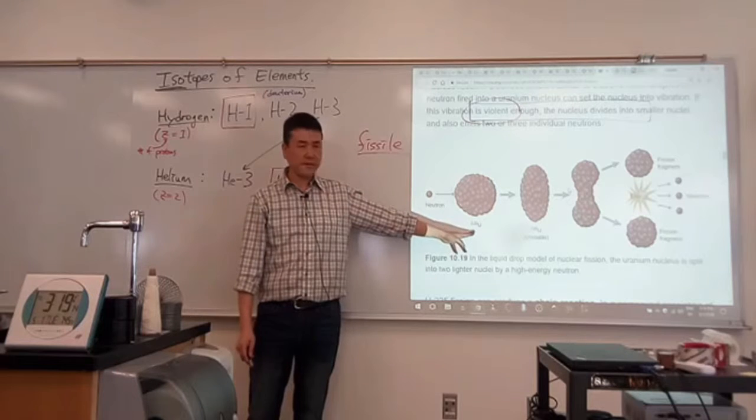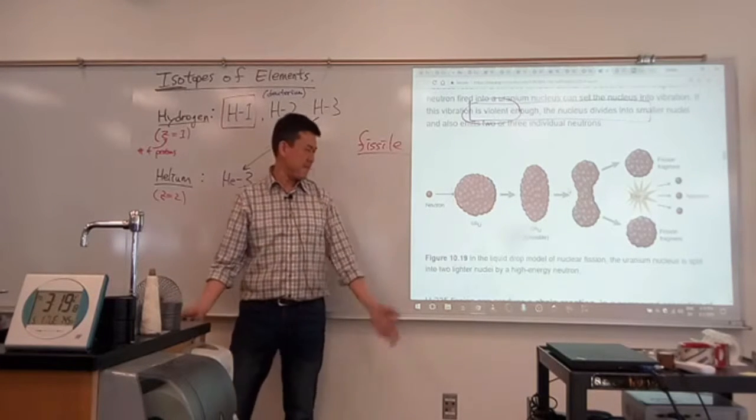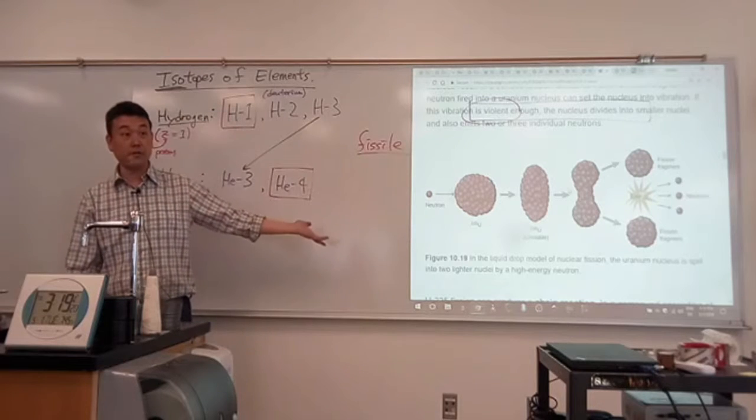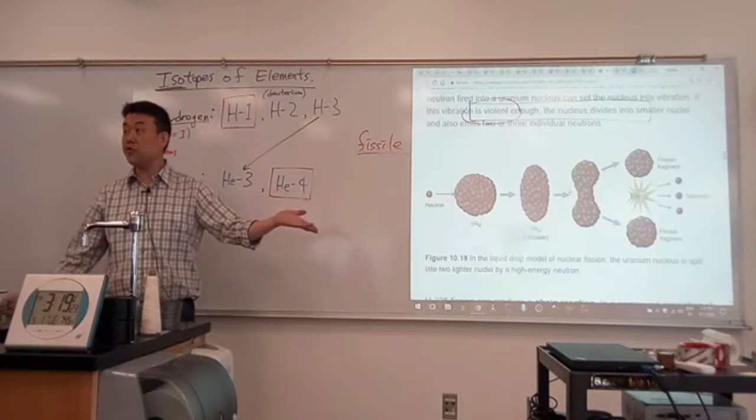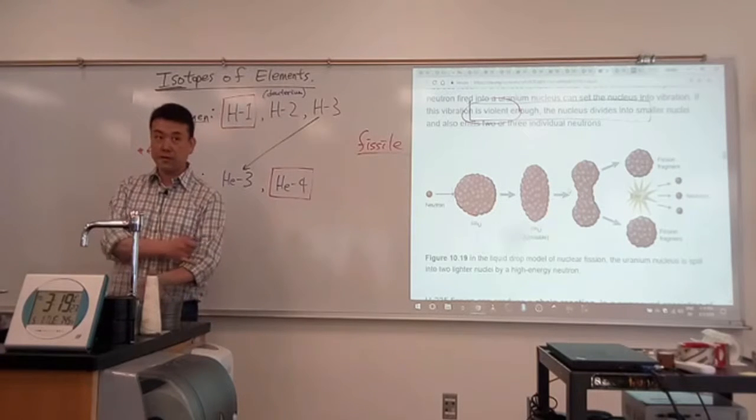Isolate uranium-235. So in the natural occurring quantities, it's mostly uranium-238, and maybe like 0.1% uranium-235. And they are isotopes, meaning they undergo the same chemical reaction. So they are difficult to separate out.